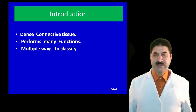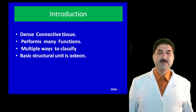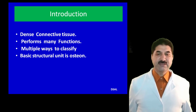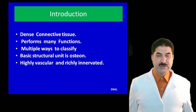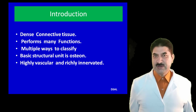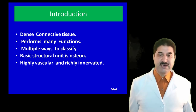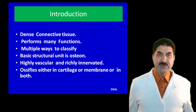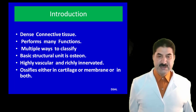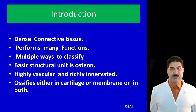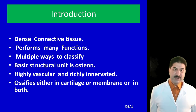Bone is a dense connective tissue. It performs many functions. There are multiple ways to classify bones. The basic structural unit of bone is called the osteon. Bone is a highly vascular and richly innervated structure. It ossifies either in cartilage, in membrane, or in both.